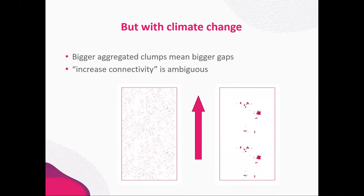With climate change, there's a problem with the rule of clustering habitat. When we add the need to range shift from south to north, clustering becomes problematic because bigger clumps mean bigger gaps. The message to increase network connectivity is therefore ambiguous. In both figures shown here, there's the same total area of habitat, but there's actually greater connectivity through the smaller sites on the left. Our partner organisations identified a need for a quantitative way to measure ecological connectivity — a metric to compare different restoration scenarios and see which gives the best value for money.